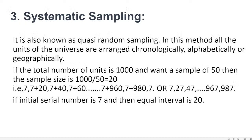Systematic sampling is also known as quasi-random sampling. Under this method all units of the universe are arranged chronologically, alphabetically, or geographically, and then data is collected systematically. For example, if total units are 1000 and sample size is 50, then the interval is 1000 divided by 50 equals 20. If the initial serial number is 7, then we select 7, 27, 47, 67 and so on at equal intervals of 20.